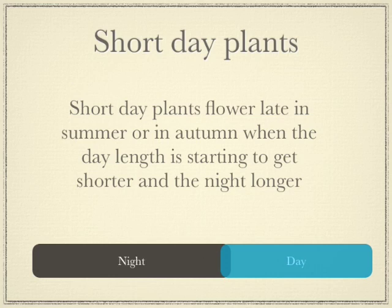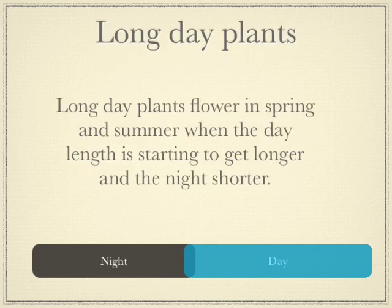There are three types of plants that all respond differently to day and night. We've got short day plants, and they flower late in summer or autumn, when the day length is starting to get shorter and the night longer. We've also got long day plants, which flower in spring and summer when the day length is starting to get longer and the nights are starting to get shorter.